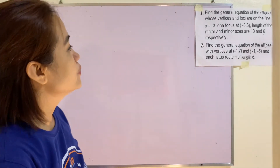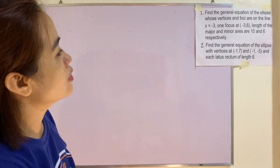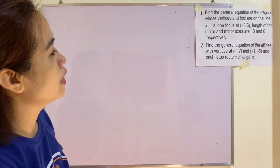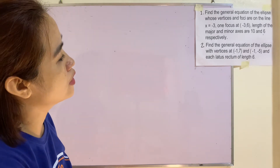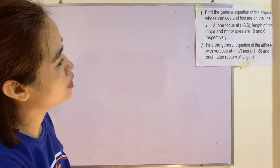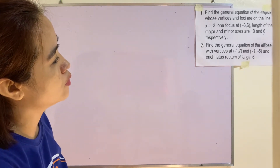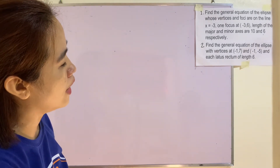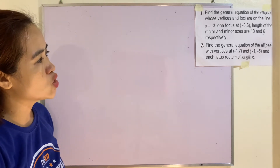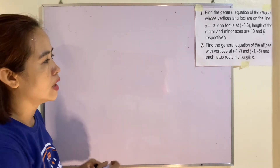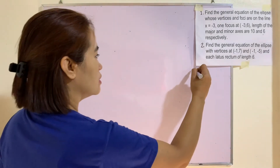Find the general equation of the ellipse with vertices at (-1, 7) and (-1, -5), and each latus rectum of length 6.